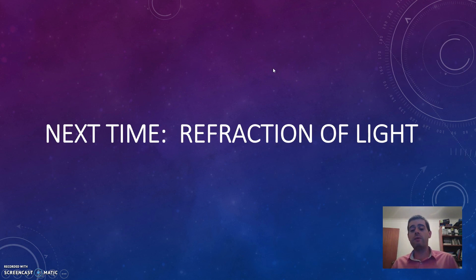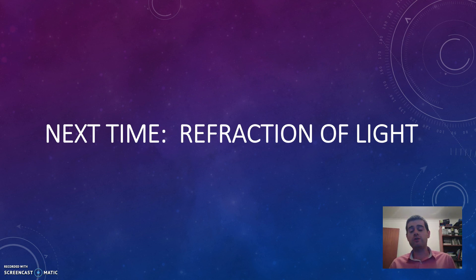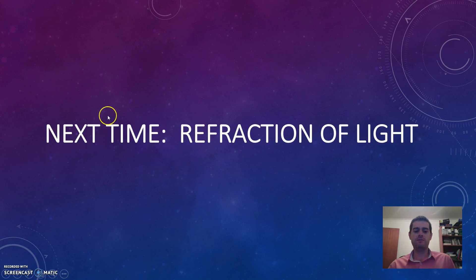That's it for our look at the ray model of light and reflection. Next time we're going to look at refraction of light — when light passes from one material into another, like from air into glass or air into water. Please make sure you've noted any difficulties or questions to discuss in class on Friday.